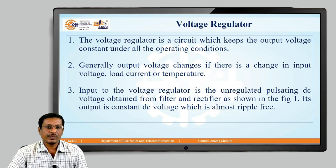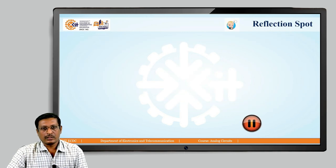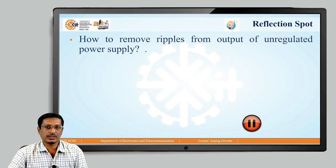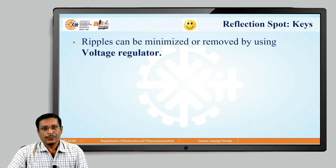Normally, the factors on which the output voltage depends are input voltage, load current, and temperature. Here is another reflection spot: how to remove ripples from the output of an unregulated power supply? Pause the video and try to give the answer. Ripples can be minimized or removed by the use of a voltage regulator circuit.